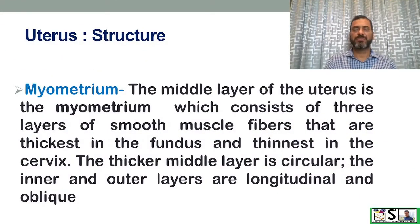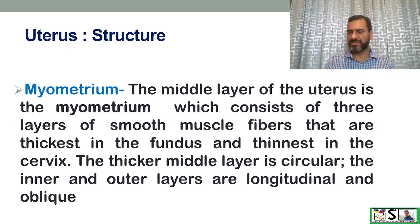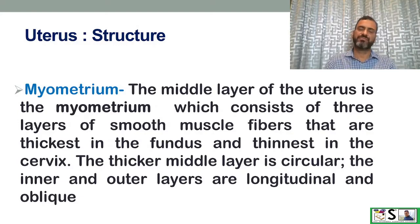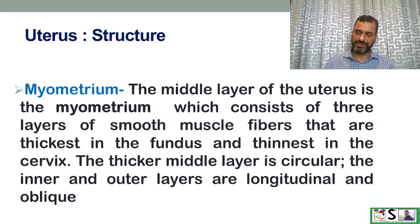The myometrium is the middle layer of the uterus and consists of three layers of smooth muscle fibers, thickest in the fundus and thinnest in the cervix. The thicker middle layer is circular, while the inner and outer layers are longitudinal and oblique.